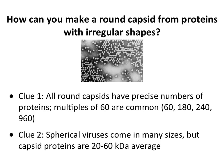For viruses like poliovirus that don't have envelopes, a spherical particle visible in an electron micrograph — back in the 50s and 60s the question was: how do you make a spherical virion from individual proteins that have irregular shapes? Two clues emerged: first, all round capsids have precise numbers of proteins — always an exact number, and they turned out to be multiples of 60 (60, 180, 240, 960, and more). Second, spherical viruses could be very small like poliovirus at 30 nanometers or very big, yet capsid proteins are always roughly 20 to 60,000 Daltons in molecular weight.